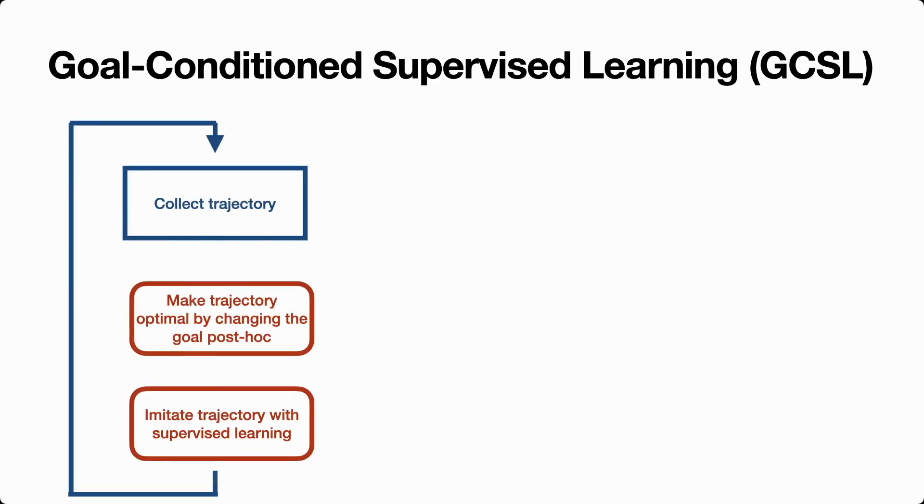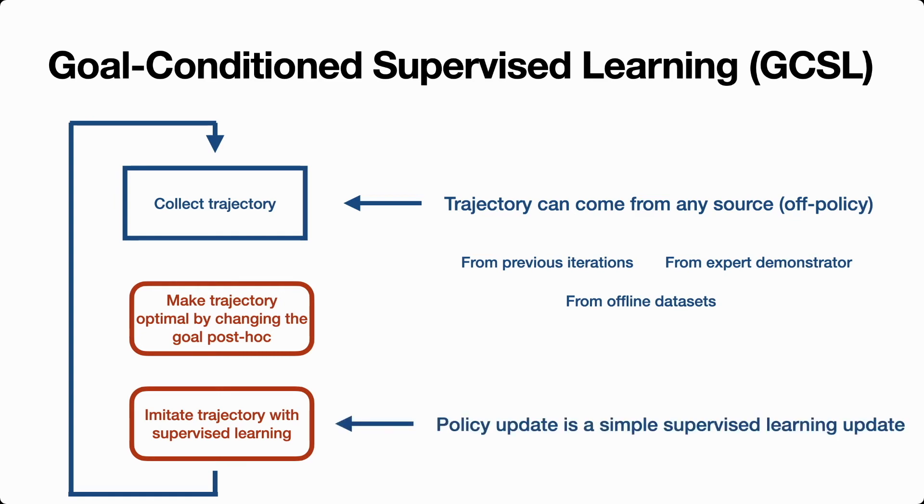There are a couple of interesting aspects about this algorithm I'd like to comment on. First, since this idea of goal relabeling works with any trajectory, this algorithm is actually completely off policy. It can relabel and imitate any trajectory, whether it's trajectories collected from a previous iteration, from an offline dataset, or even an expert demonstrator. In practice, this means we can maintain a replay buffer of trajectories, and at policy update time, sample a random trajectory and perform the GCSL update with it.